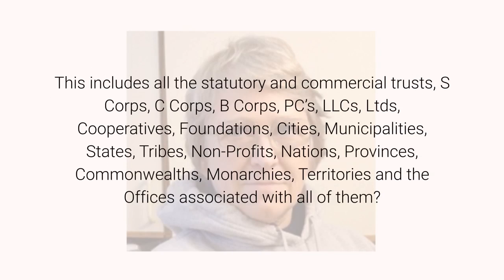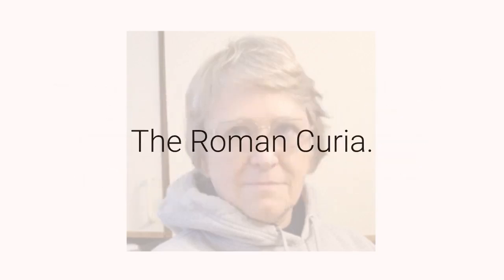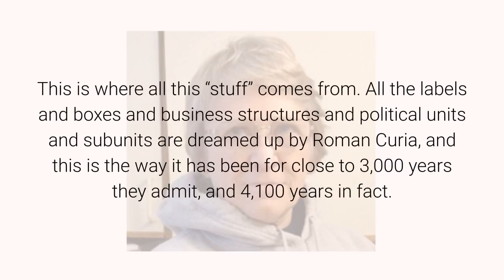This includes all the statutory and commercial trusts — S-corps, C-corps, B-corps, PCs, LLCs, limiteds, cooperatives, foundations, cities, municipalities, states, tribes, non-profits, nations, provinces, commonwealths, monarchies, territories, and the offices associated with all of them. The Roman Curia. This is where all this stuff comes from. All the labels and boxes and business structures and political units and subunits are dreamed up by the Roman Curia, and this is the way it has been for close to 3,000 years.